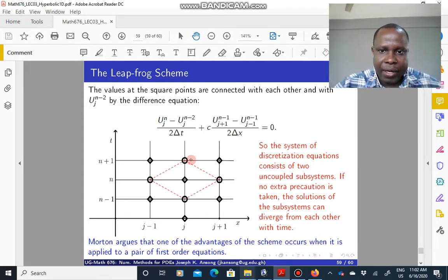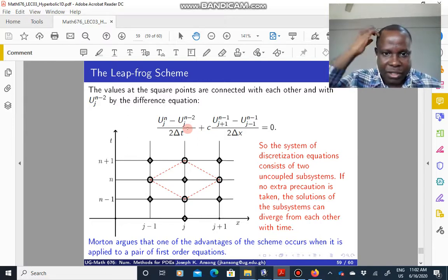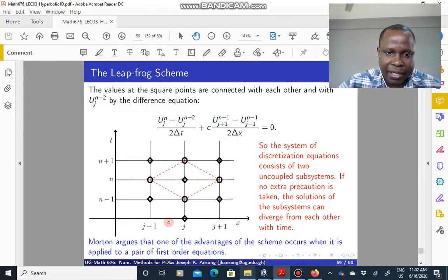So the square points, for instance, the value at the square points are connected by this system here. Basically, if you substitute n-1 into the original scheme, you are going to get this scheme. And this is the scheme that is connecting the square points.